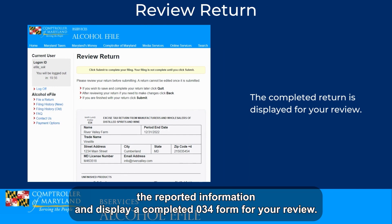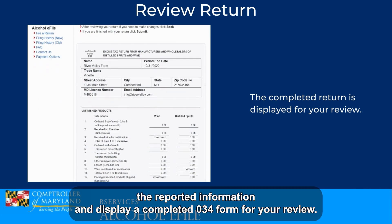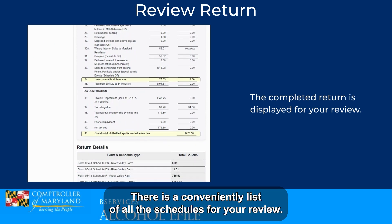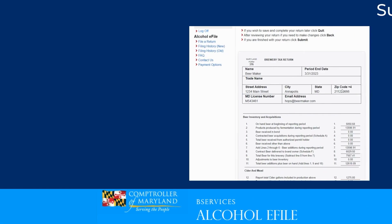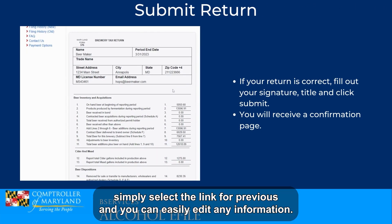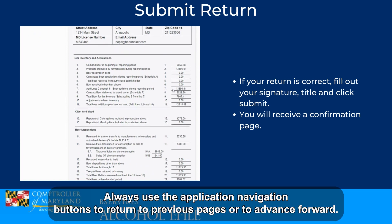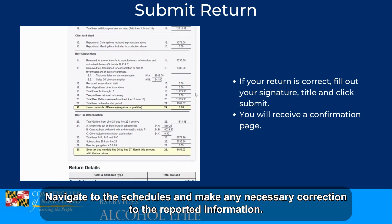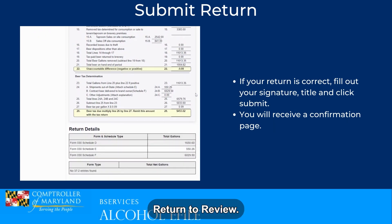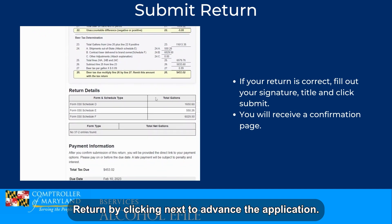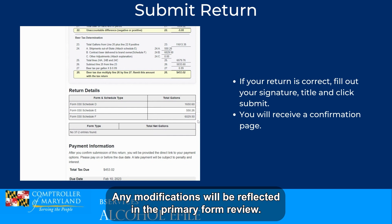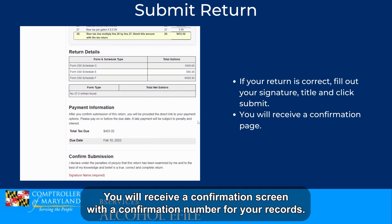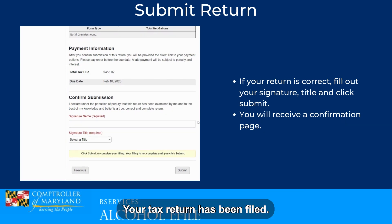The system will combine all the reported information and display a completed 034 form for your review. Click Next — you can see each line item and the schedule totals have been added to each area. Below the primary form display, there is a convenient list of all the schedules for your review. If there are any discrepancies, simply select the Previous link and you can easily edit any information. Always use the application navigation buttons to return to previous pages or to advance forward. Navigate to the schedules and make any necessary corrections to the reported information. Return to the review page by clicking Next to advance the application. Any modifications will be reflected in the primary form review. Once you are satisfied with the accuracy of the return details, click Submit. You will receive a confirmation screen with a confirmation number for your records. Your tax return has been filed.